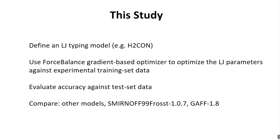What I'm going to talk about is a study led by Michael Schauperl, a postdoc in my lab, where we defined a set of Lennard-Jones typing models, keeping them quite simple. For example, one of them would be H2CON — so two hydrogen types, one carbon type, one oxygen type, and one nitrogen type. We used Li-Ping Wang's Force Balance gradient-based optimizer to optimize the parameters against experimental training set data, then evaluated accuracy against test set data, and compared with SMIRNOFF99Frosst and GAFF 1.8.